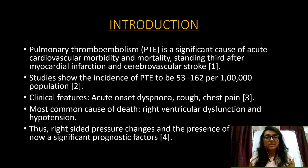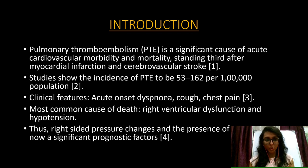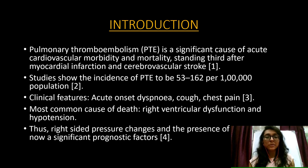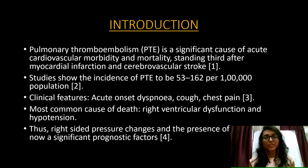Pulmonary thromboembolism is a significant cause of cardiovascular morbidity, ranking third after myocardial infarction and stroke. Studies have shown the incidence to be 53 to 162 per 1 lakh population. The most common clinical presentation is acute onset dyspnea, with other symptoms including cough and chest pain. The most common cause of death in these patients is right ventricular dysfunction and hypotension; thus, right ventricular pressure changes are a significant prognostic factor.